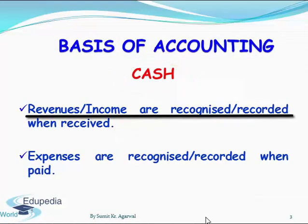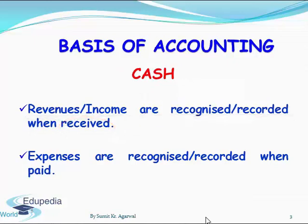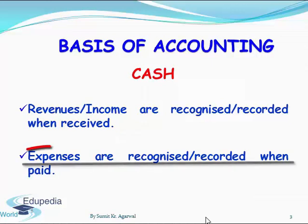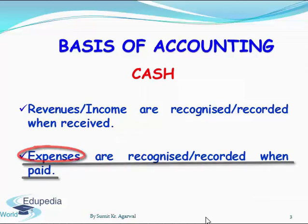So now let's understand cash and accrual basis of accounting one by one. In cash basis of accounting, revenues or incomes are recognized or recorded when received — so on the date of receipt of money, that sale of goods or services is recorded. Similarly, expenses are recorded on the date of payment.